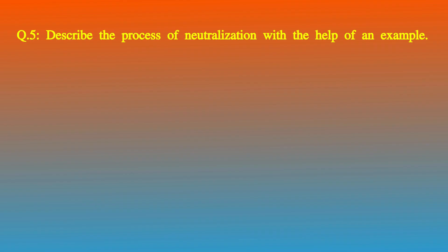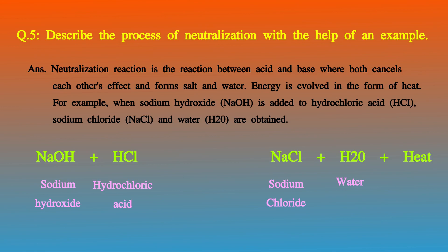Question 5: Describe the process of neutralization with the help of an example. The reaction between an acid and a base is known as a neutralization reaction. In this reaction, both acids and bases cancel each other's effect. Neutralization results in the formation of salt and water, and energy in the form of heat is evolved. For example, when sodium hydroxide (NaOH) is added to hydrochloric acid (HCl), sodium chloride (NaCl) and water (H₂O) are obtained.